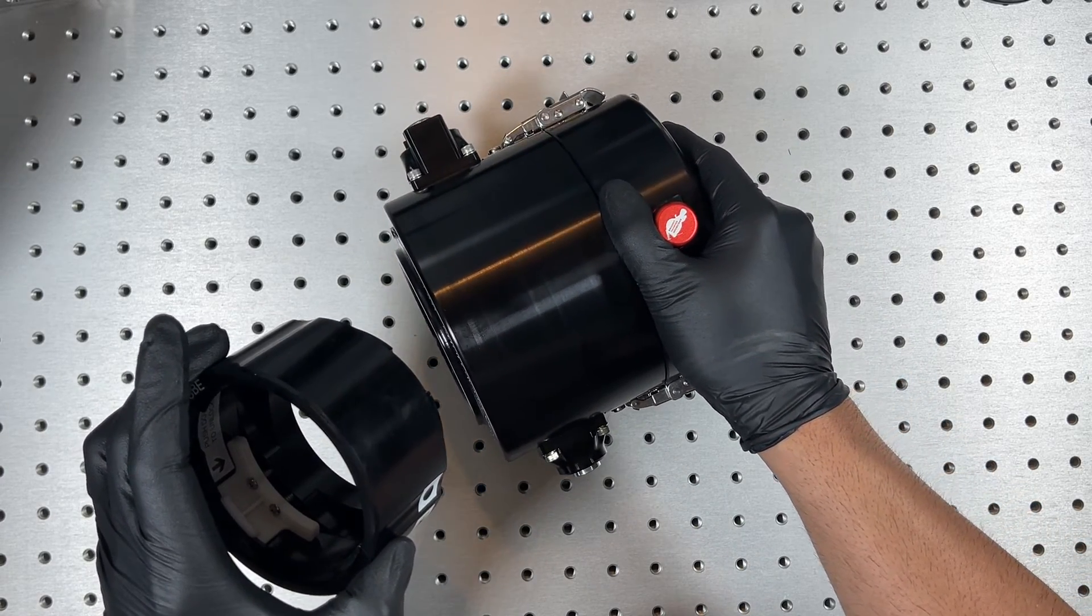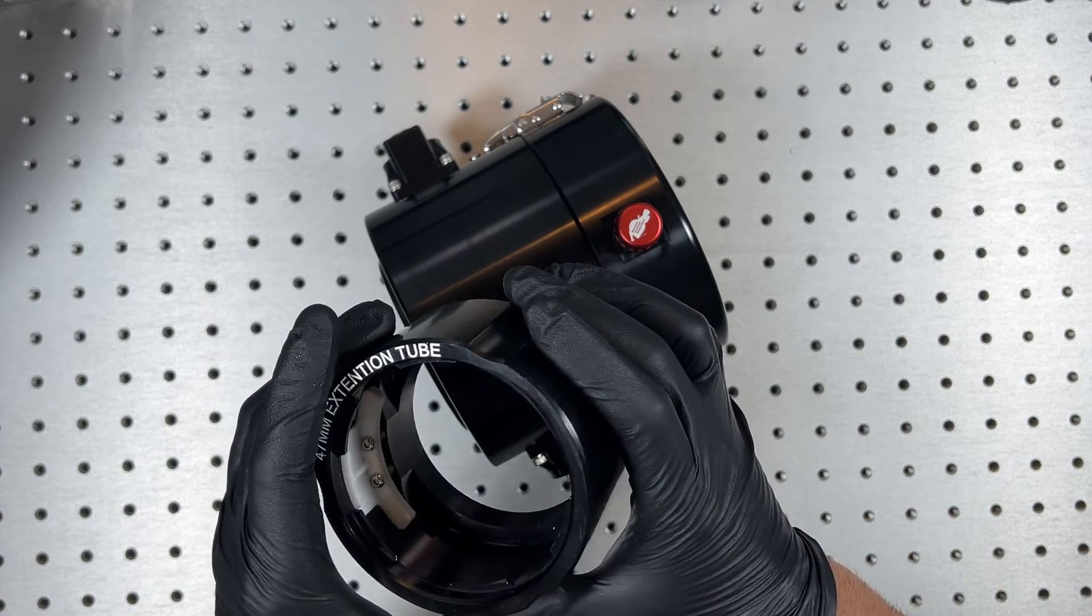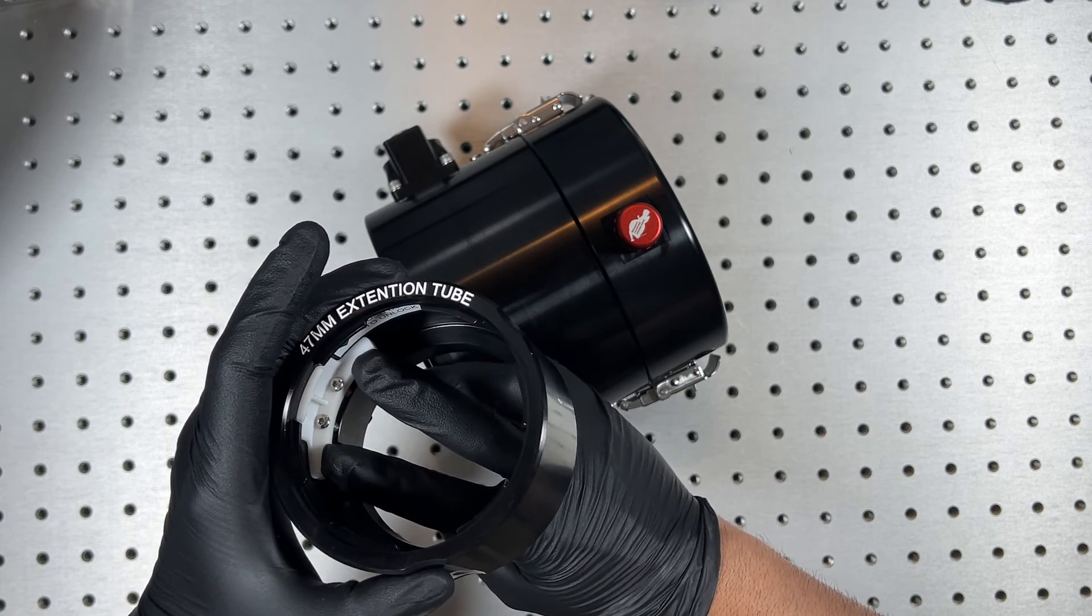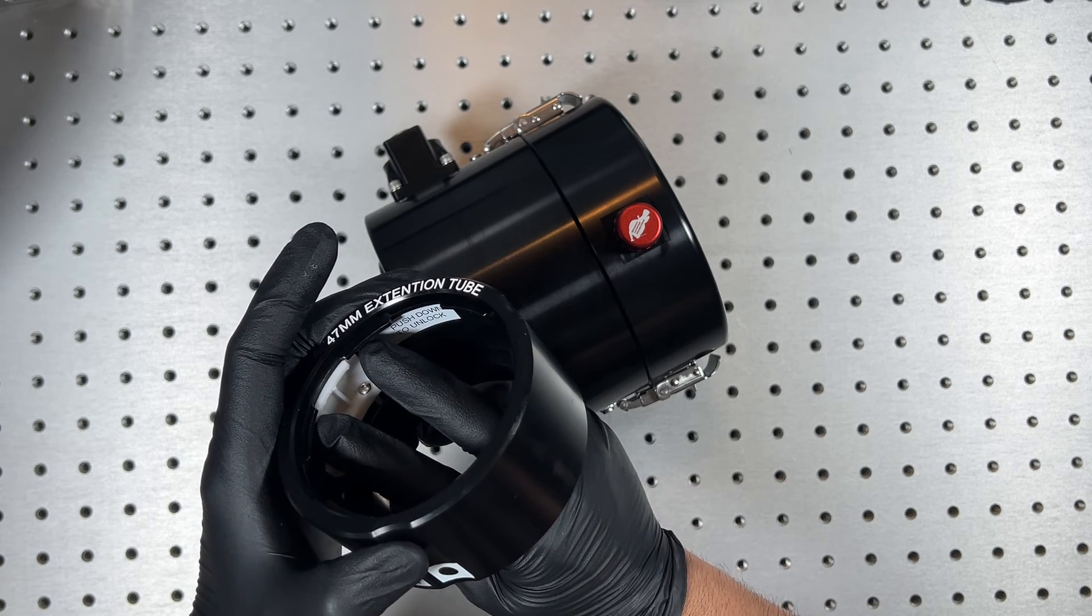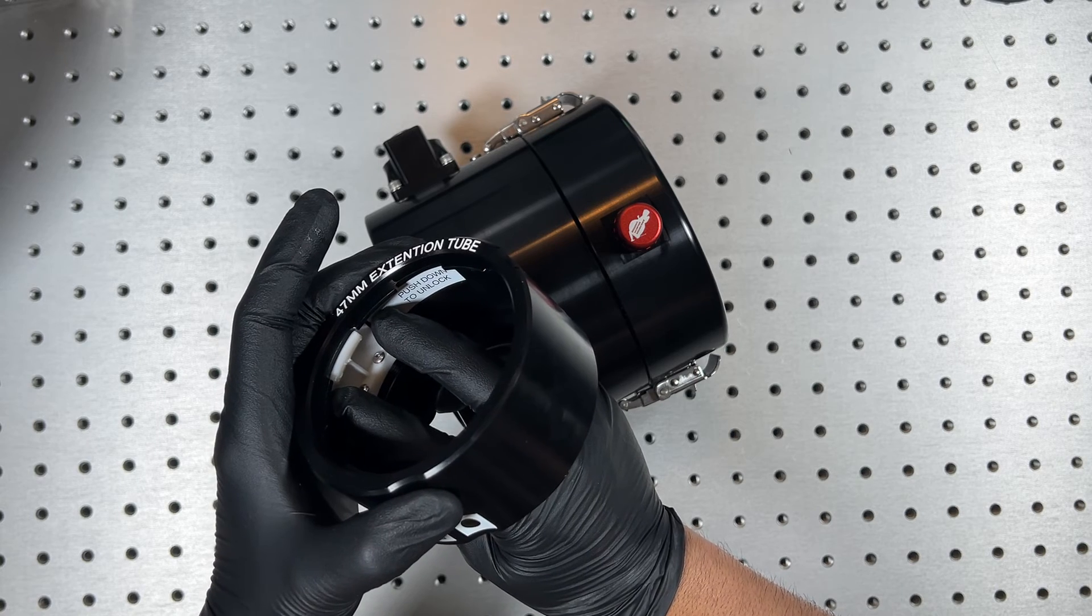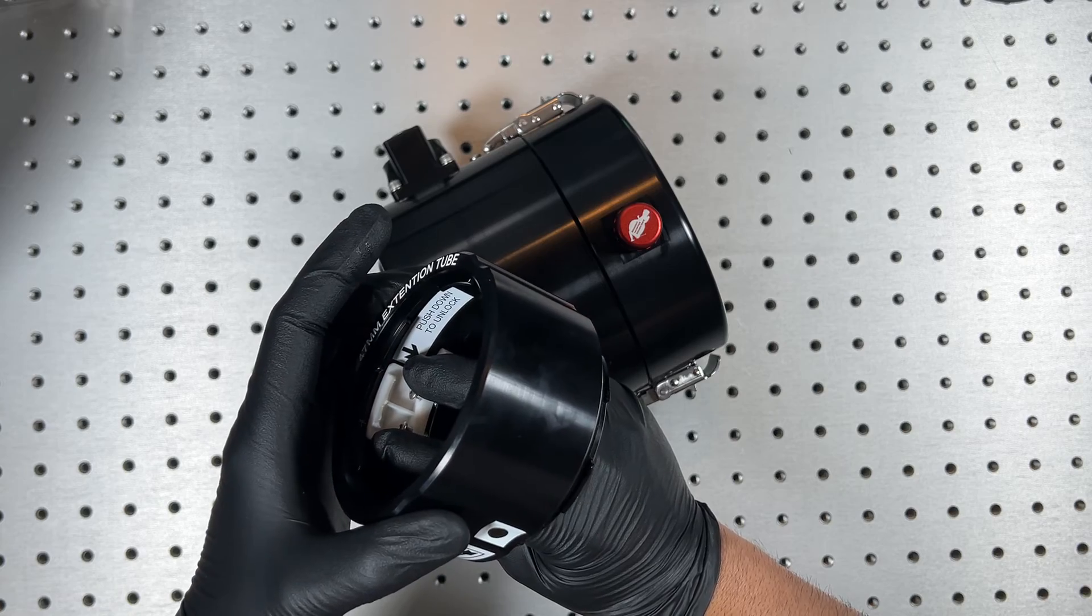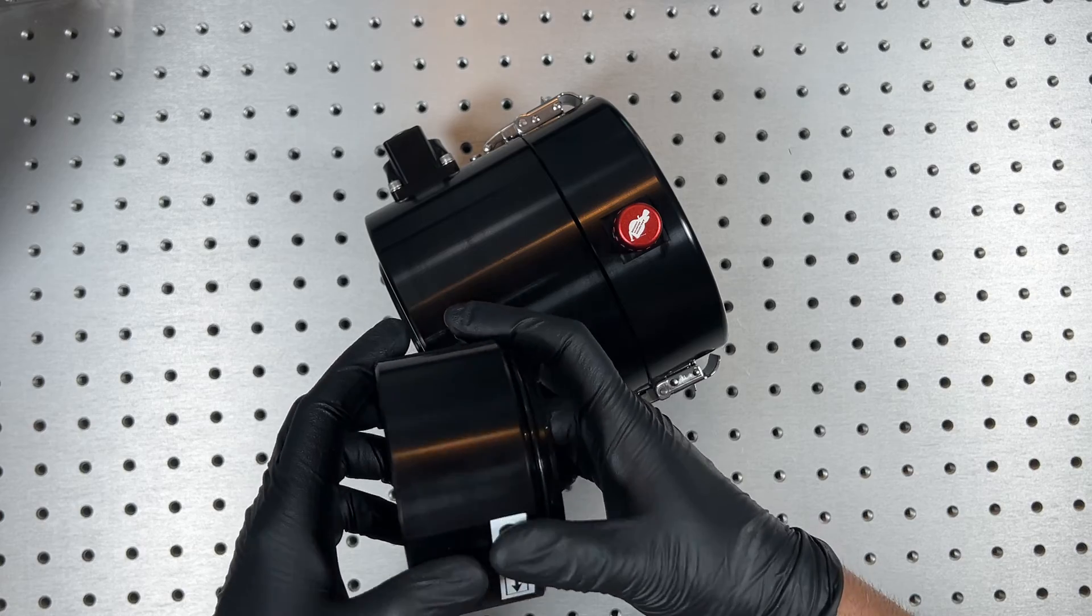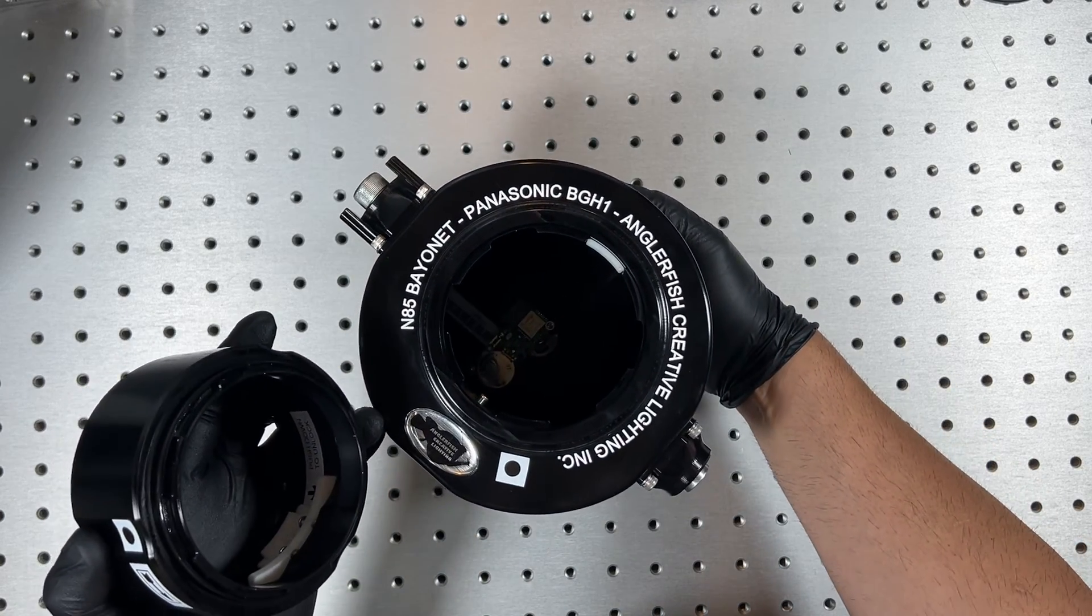To unlock the ports inside the housing and the extension tubes there is a locking mechanism inside and it requires you to push down or pull down on the mechanism to release the lock and allow you to rotate the flange and the bayonet and unlock it from the housing.